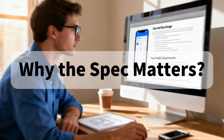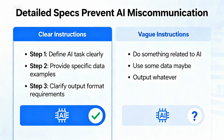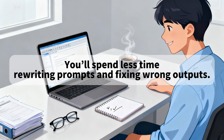So why does the spec matter? AI can't build what you haven't clearly imagined. A detailed spec prevents miscommunication with the AI. You'll spend less time writing prompts and fixing wrong outputs. In vibe coding, your spec is a manual for your AI code developer.